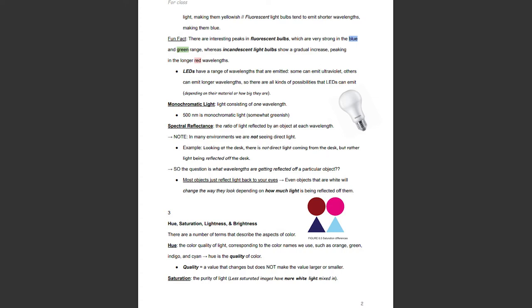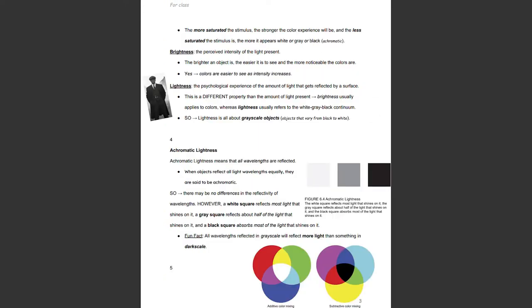Saturation is the purity of light, so less saturated images have more white light mixed in. The more saturated the stimulus, the stronger the color experience will be, and the less saturated the stimulus is, the more it appears white, gray, black, or achromatic. More saturation equals a stronger color experience; less saturation equals a weaker color experience. Brightness is the perceived intensity of the light present — the brighter an object is, the easier it is to see, and the more noticeable the colors are.